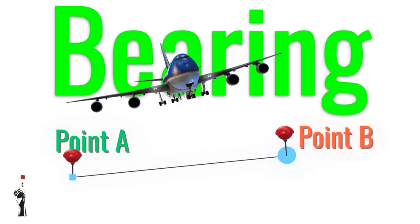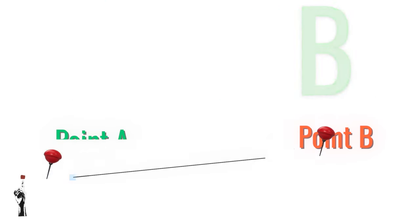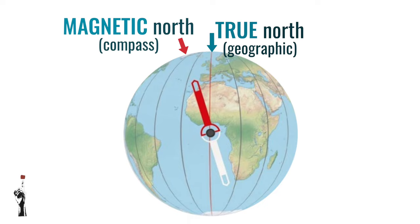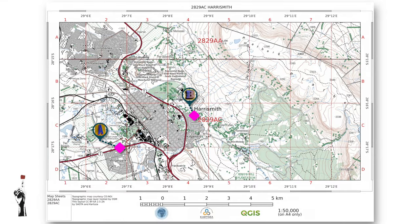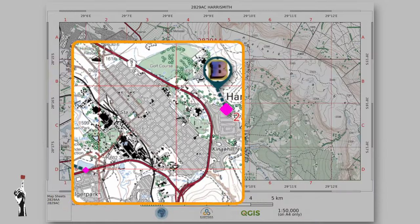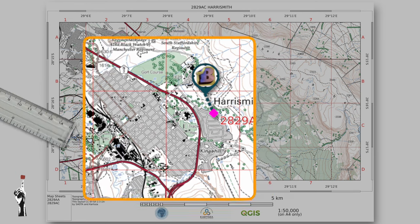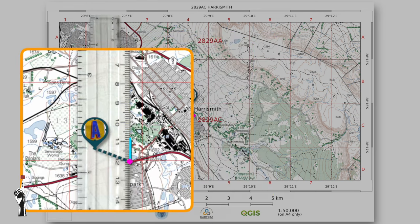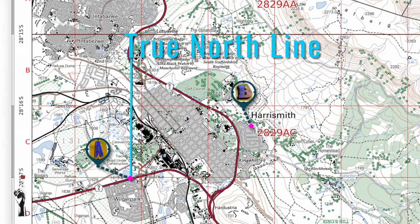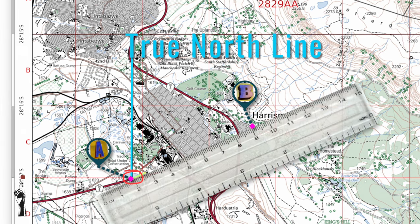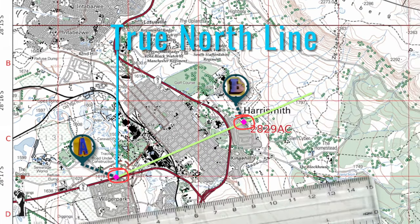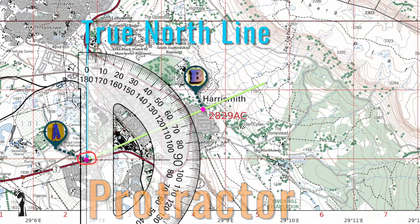Bearing is a more accurate way of measuring the direction between two places. True bearing is the measurement of the angle between the true north line and the line joining two places. For example, from A to B, A is our starting point and B is our end point. We draw a straight line through our starting place — in this instance A — which is called your true north line. Then you join the two places A and B with a pencil line.